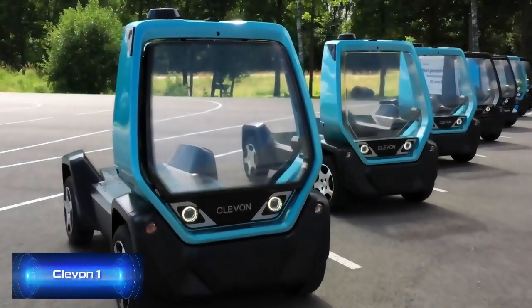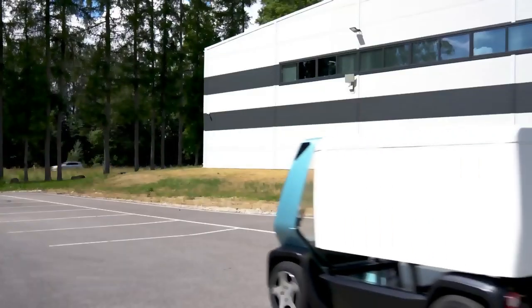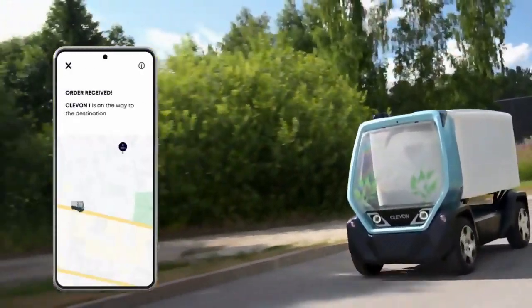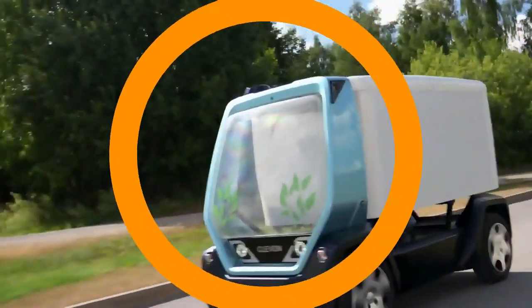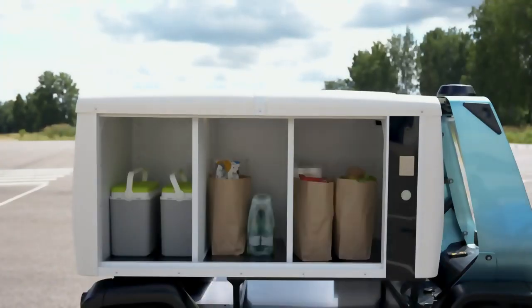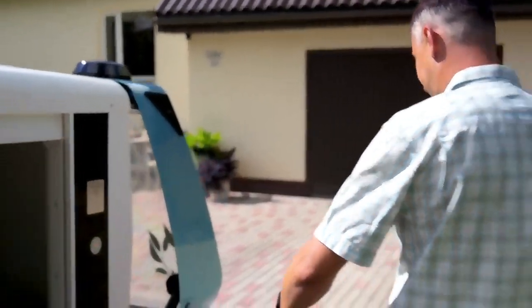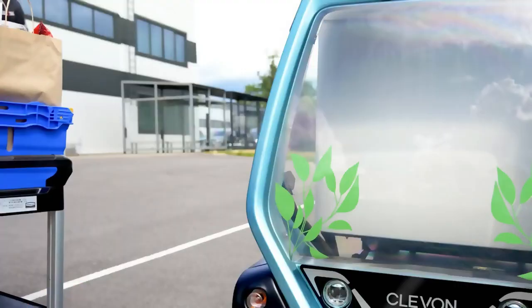Next up is a project from Estonia. Clevin One is an unmanned delivery vehicle. It can drive on public roads and carry up to 100 kilograms, which is profitable because the delivery cost drops by about 30 percent. Thanks to its modular design, the Clevin One is easily adaptable to specific tasks. It's shorter than an adult person and offers a width of 1.1 meters. It has a range of 80 kilometers on a single charge, with the battery charging from 20 to 80 percent in 45 minutes. The vehicle can be used all year round.